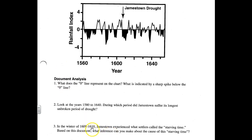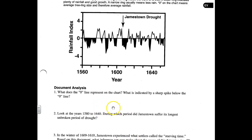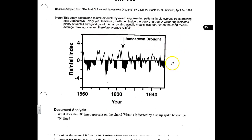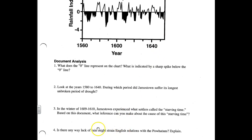Question three: in the winter of 1609-1610, Jamestown experienced what settlers called the starving time. Based on this document, what inference can you make about the cause of this starving time? The document deals with rainfall and drought at Jamestown — what educated guess can you make about the cause of this starving time in 1609-1610?